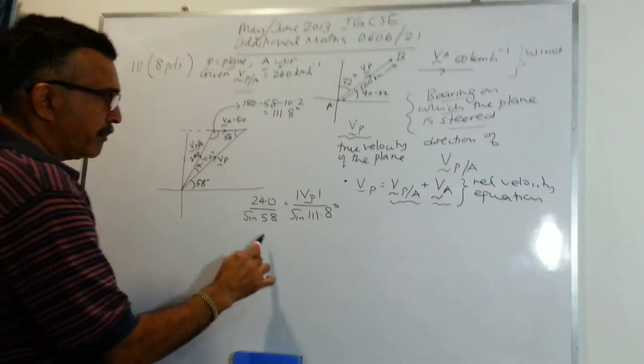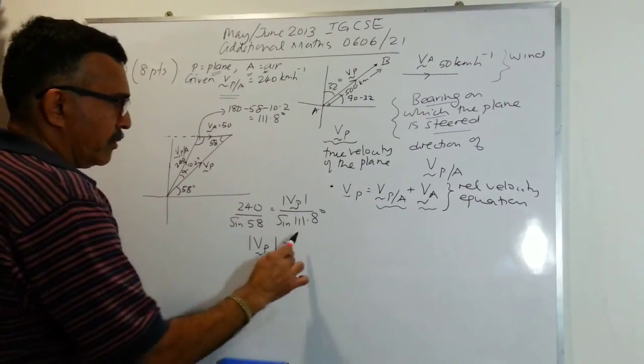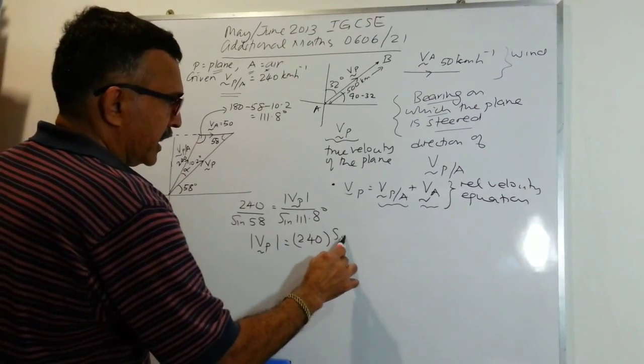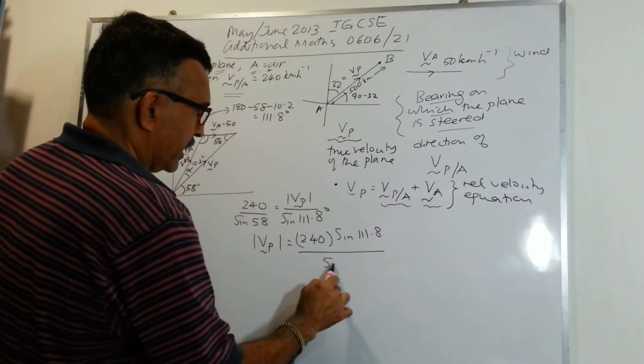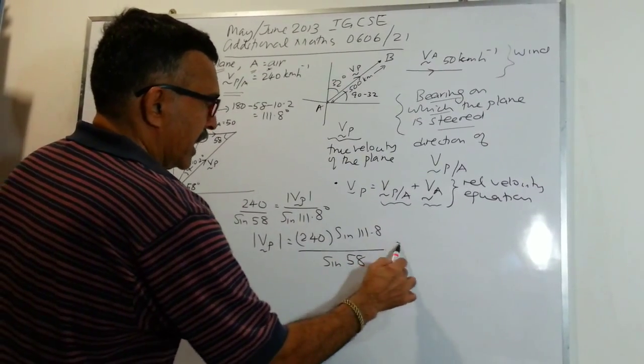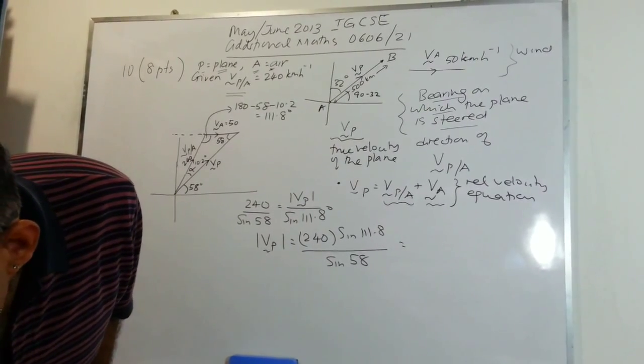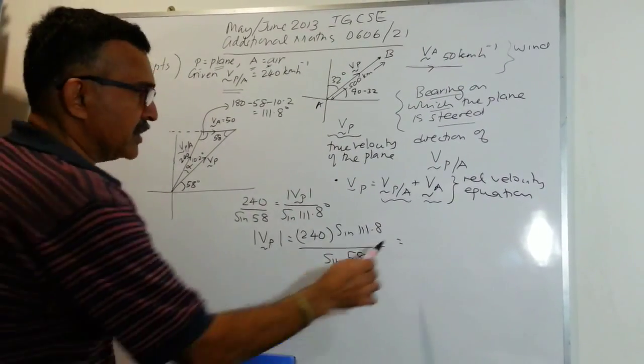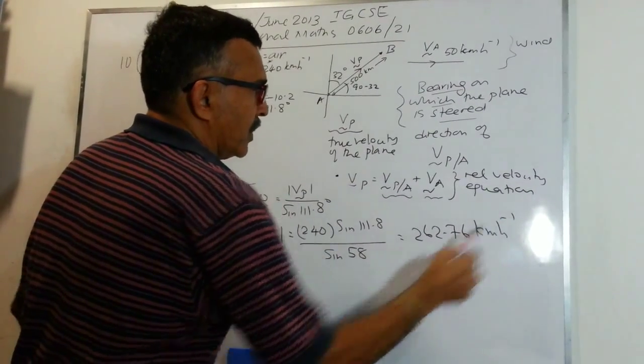Solving this, it will be 240 times sine 111.8, the whole thing divided by sine 58. When you use your calculator, you will get 262.76.